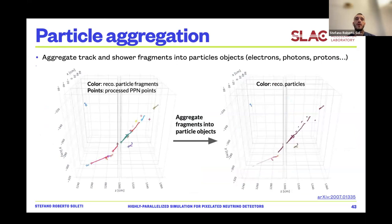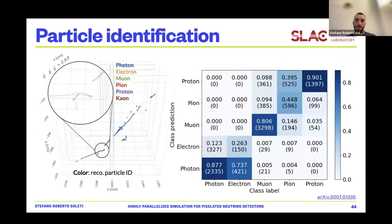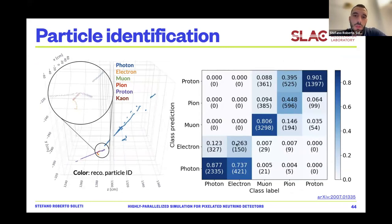Once you have classified voxels and found points of interest, you aggregate track and shower fragments into particle objects — a photon or electron could be made of several shower fragments, so you aggregate them into physically meaningful objects: electrons, photons, protons, etc. The last step is particle identification: once aggregated, you identify the object type. The particle identification works quite well, as shown by the confusion matrix. The main difficulty is distinguishing electrons from photons — especially at high energy they look the same in the detector — and similarly protons and pions in certain energy ranges.